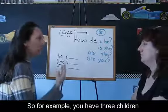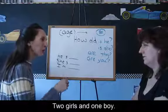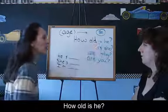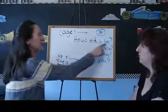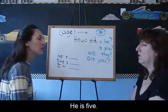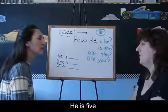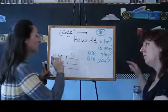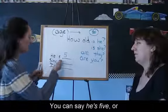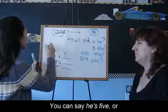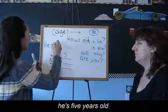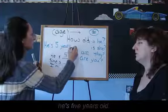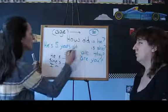you have three children. Two girls and one boy. Yes. Tell me about your son. How old is he? He is... five? Five. He's five. Five old? You can say five. So you can say he's five, or he's five years old.